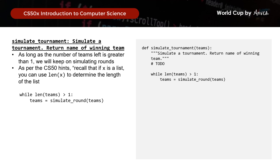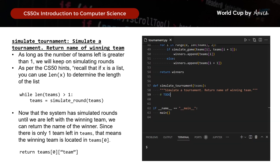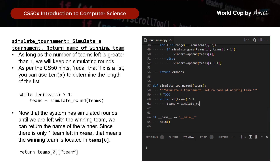So we say: while len(teams) > 1, we apply simulate_round. At the end of every round, we update the teams list with the winners from that round until only 1 team remains. Since there is only 1 team left, the winning team is teams[0], and we return just the name: teams[0]['team']. Let's put this in code — while the number of teams is more than 1, we keep simulating rounds and updating until it becomes 1, then return the name of the winning team. And that is how you implement simulate_tournament.